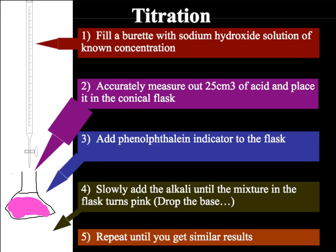With all titrations, it is best to carry out a rough first titration to give you an idea of the approximate amount of alkali or acid needed for neutralisation. You can then carry out three more accurate repeats. As a general rule, we do not use universal indicator, as it is very difficult to tell accurately when the reaction is over due to its full range of colours rather than one distinctive colour change.